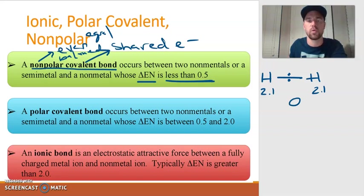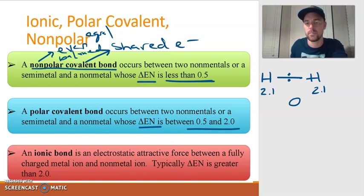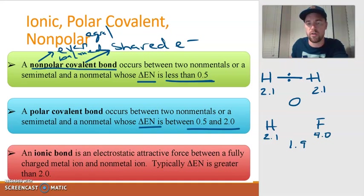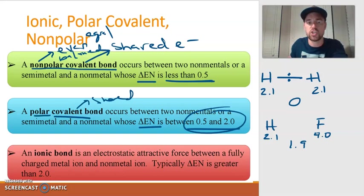A polar covalent bond occurs when the electronegativity difference is between 0.5 and 2.0. In the case of HF, hydrogen is 2.1 and fluorine is 4.0 — a difference of 1.9, which falls in this range. The bond is still covalent, meaning electrons are still shared, but they're shared unequally. That's what polar means — the electrons are a little closer to fluorine, which is why we saw the red electron density shading on the fluorine side.